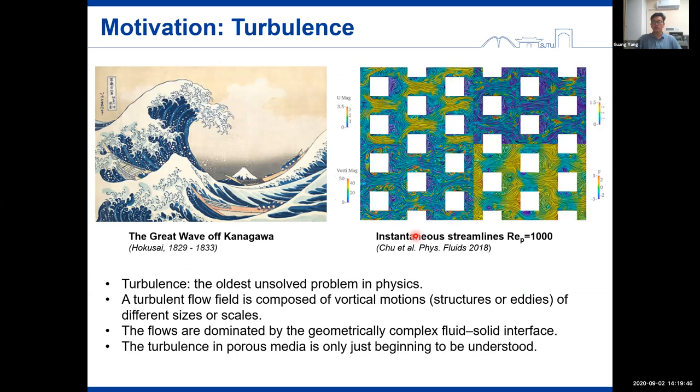One of the challenges is the involvement of turbulence, which is a topic of this study. Turbulence has been found to occur in the pores of the porous media when the Reynolds number reaches to about several hundreds. And turbulence is considered as the oldest unsolved problem in physics. A turbulent flow is composed of multiple motions of different length scales. And unlike channel flows, turbulence in porous media is strongly influenced by the geometrically complex fluid and solid interfaces. Therefore, the turbulence in porous media is only just beginning to be understood.